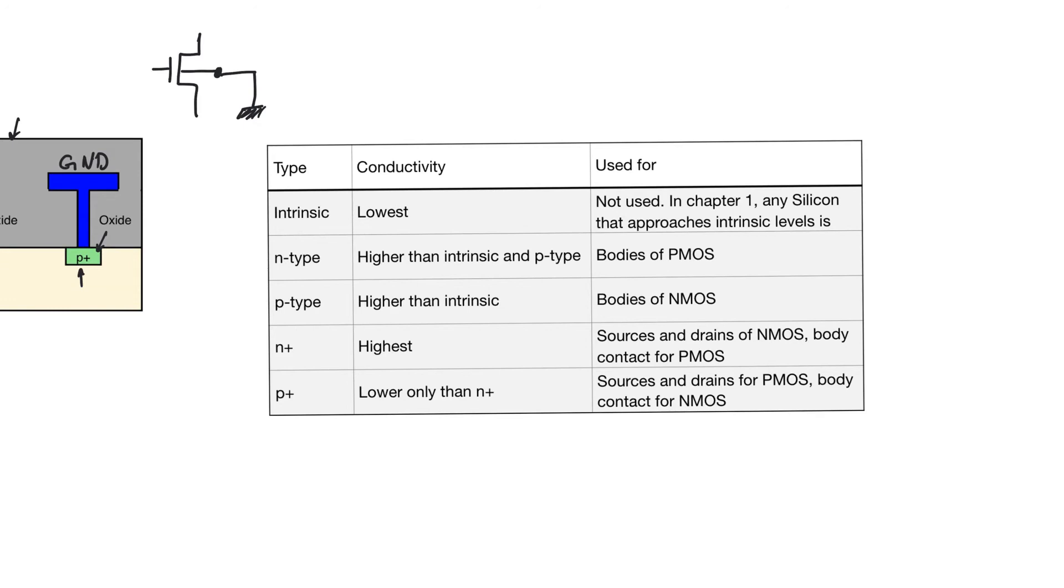We also use N-type silicon, which is like lightly doped N-type silicon. This is used to make the N-well, which forms the bodies of the PMOS transistors. We use lightly doped P-type silicon, which is the substrate of the wafer. It's the body of the wafer. And it's also sometimes used to make wells in two well processes in which the NMOSs are also created within wells.